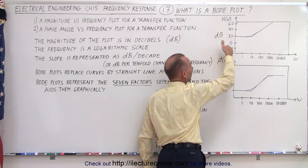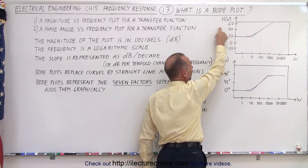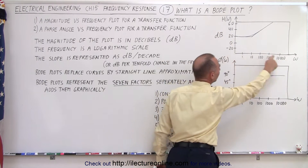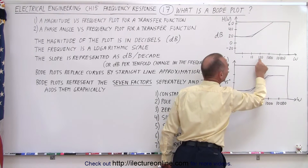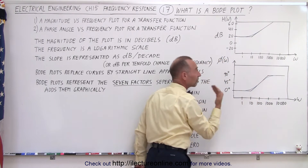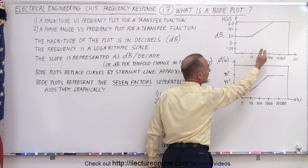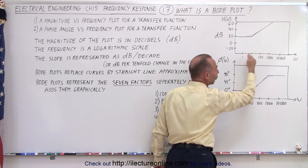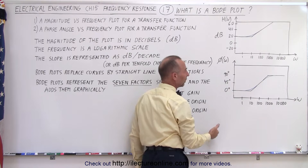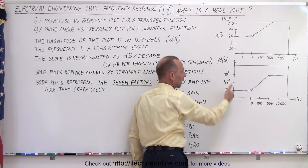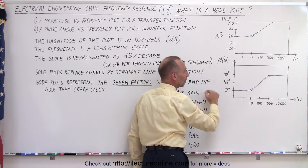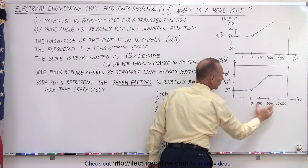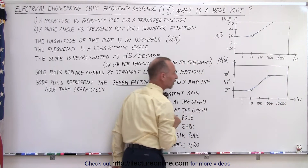On the vertical axis we have the transfer gain, expressed in terms of decibels. On the horizontal axis we have the frequency, and notice that it's a logarithmic scale — every time we increase the same distance on the scale, it's tenfold the value we had before. Same for the phase angle: on the vertical axis we have the phase angle in degrees, and on the horizontal axis we have the frequency, again in a logarithmic scale.